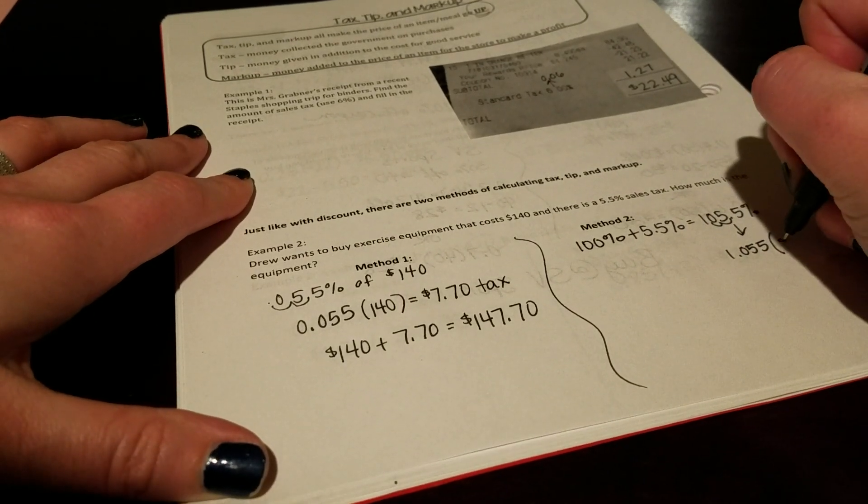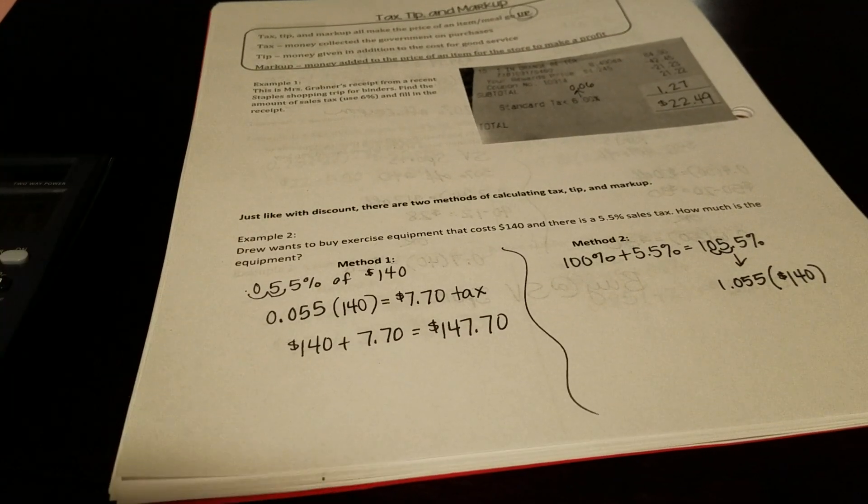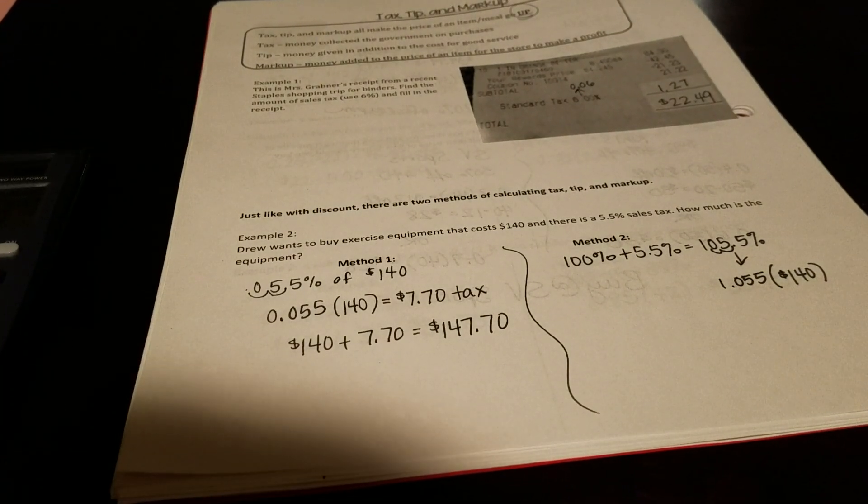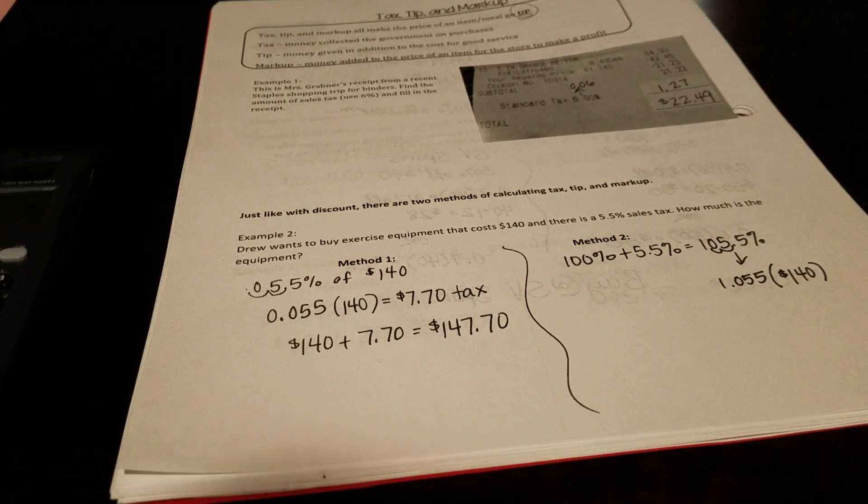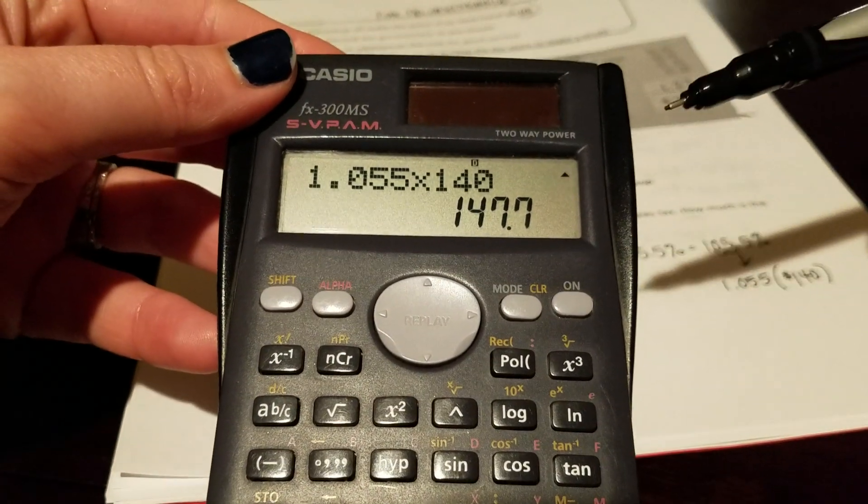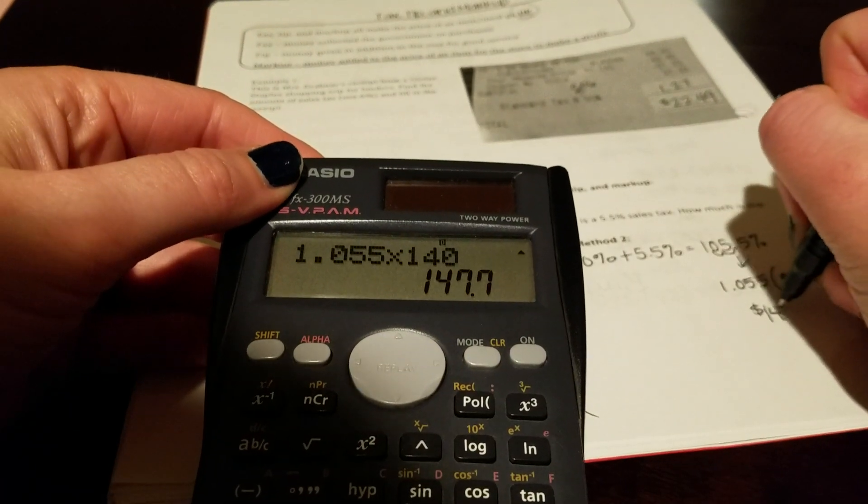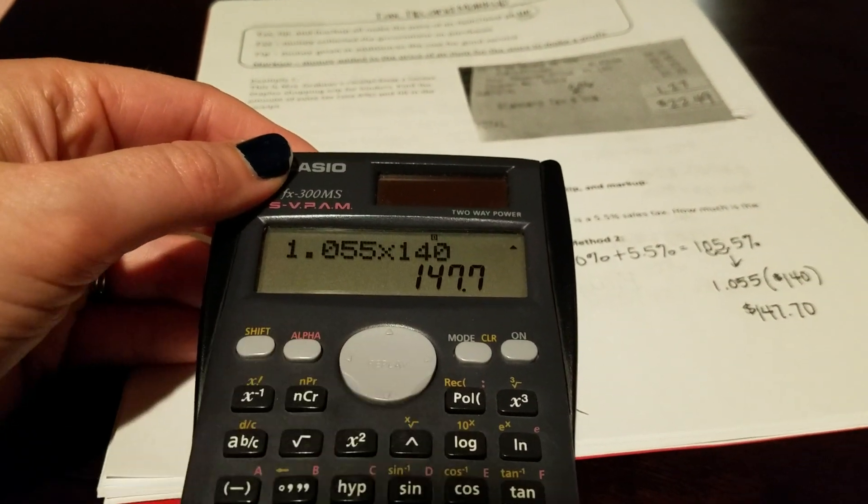And we can multiply that times the cost of our item, our gym equipment. And in doing that, just want to prove to you, when you actually multiply those together, we still get the $147.70 then.